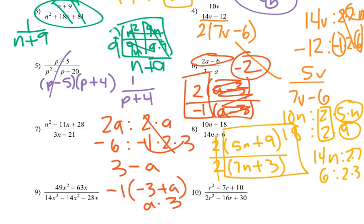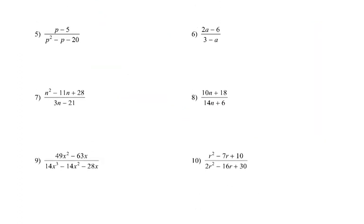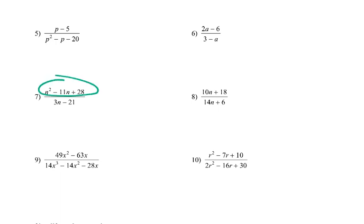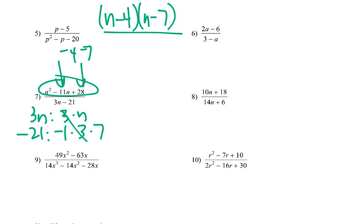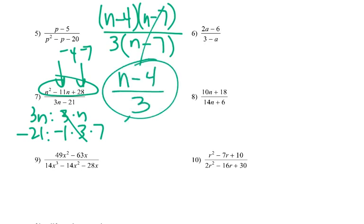Number 7 kind of combines some of these. The top here — factors of 28 that would equal negative 11 would be negative 4 and negative 7. So on the top I'd get n minus 4 times n minus 7, over 3n and negative 21. I could pull out a 3, leaving n minus 7. The n minus 7's cancel, and we get n minus 4 over 3 for our answer.